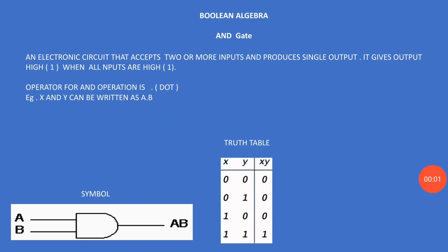AND gate — an electronic circuit that accepts two or more inputs and produces a single output. It gives output one (high) when all inputs are high or one. The operator is the dot operator. X AND Y can be written as A dot B. You can see the symbol of the AND gate with inputs A and B, and the output is A dot B, or simply AB.